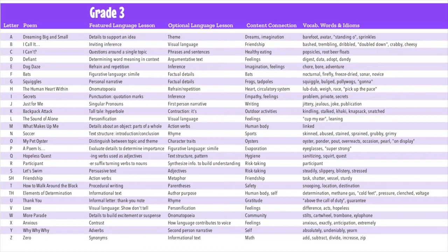This is a typical spreadsheet for third grade and you can see that the poems are listed alphabetically. We don't expect anybody to take the lessons alphabetically — we expect you to choose lessons based on your literacy goals. We have a featured and an optional language lesson, a content area connection in the primary grades, and literary themes in the intermediate and middle grades. We've also listed the potentially challenging vocabulary words in every lesson.